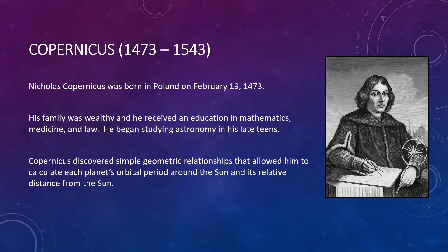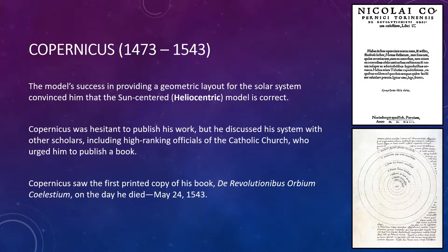Through this process, Copernicus discovered simple geometric relationships that allowed him to calculate each planet's orbital period around the Sun, as well as its relative distance from the Sun in terms of the Earth-Sun distance, which we call the Astronomical Unit today. The model's success in providing a geometric layout for the solar system convinced him that the sun-centered model must be correct.